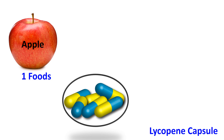Foods are materials in a raw, processed or formulated state that are consumed orally by humans. Generally there is no limitation such as dose on the amount of food that may be consumed, whereas a drug is consumed in the form of a dose. However, this does not mean that we can eat as much as we want. Definitely we need to follow the dietary guidelines.